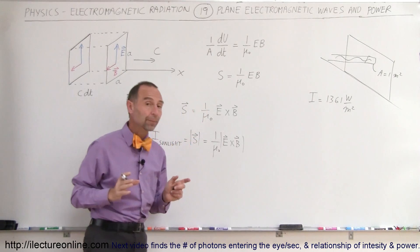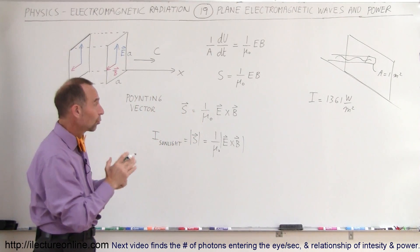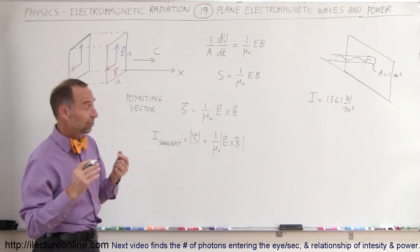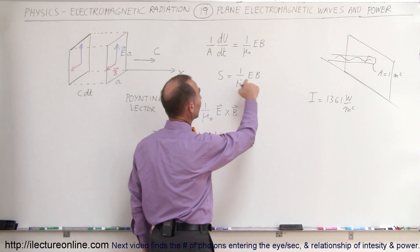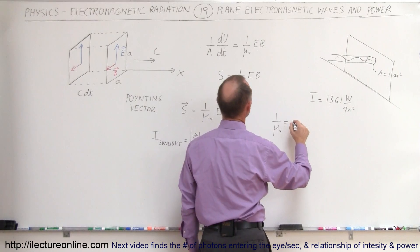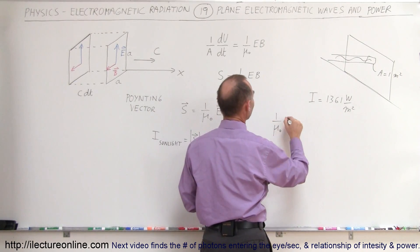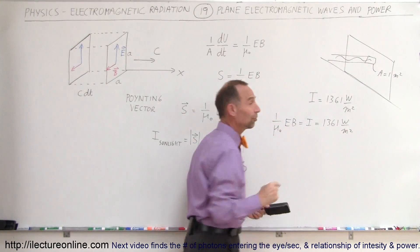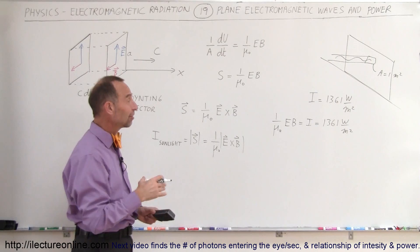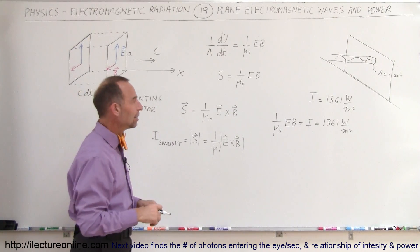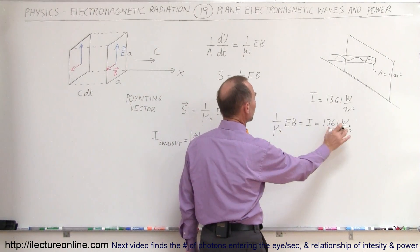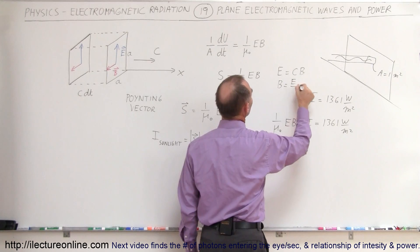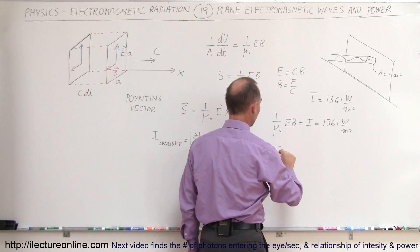We want the magnitude of that as well. If that equals 1,361 watts per square meter, can we figure out what E and B are — the oscillations of the electric field and the magnetic field? The answer is yes. We set 1 over mu sub naught times E times B equal to 1,361. We also use the relationship that E equals C times B, or B equals E divided by C, and substitute.